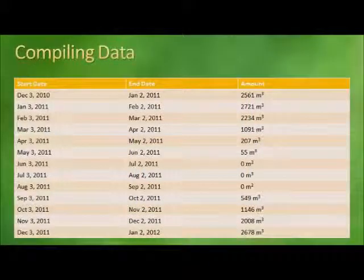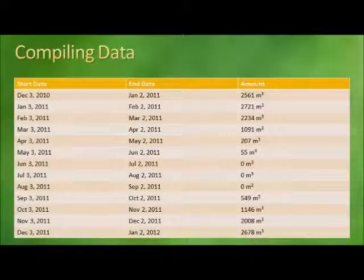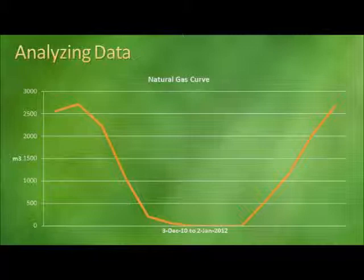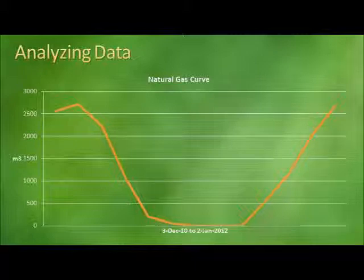In order to properly calculate a carbon footprint, consumption data for each source activity must be obtained. This data should include all consumption that took place within the reporting period, usually one year. This graph shows the data points from the previous screen and represents a typical natural gas curve. Notice how it peaks in the winter months and moves to zero during the summer months, then back up again in the fall. In this case, there are no gaps or irregularities in the data.